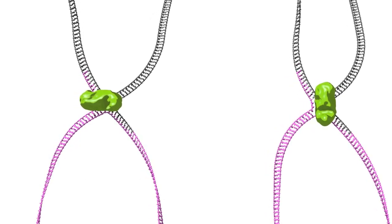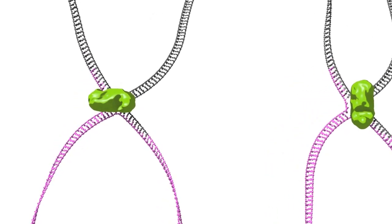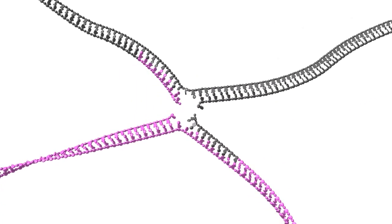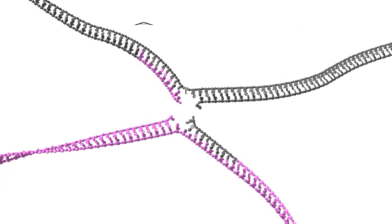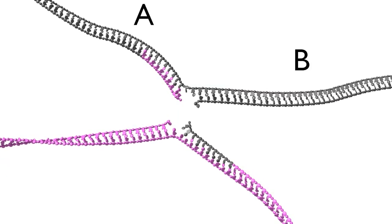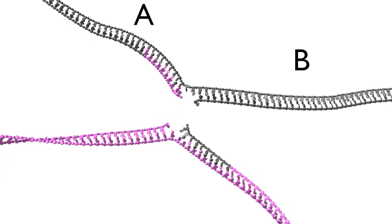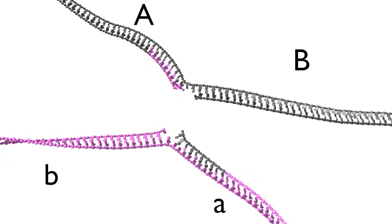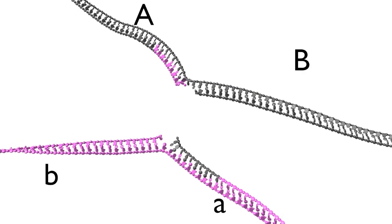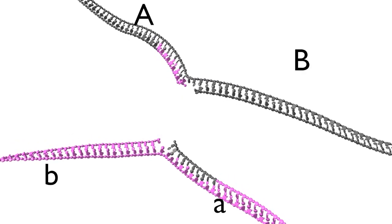Note the very different consequences of the two cleavages. Upon cleavage along the horizontal axis, the parental segments — big A in grey and big B in grey, and little a pink and little b pink — are still covalently linked to each other.